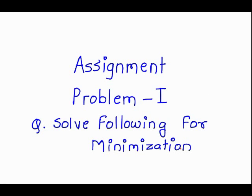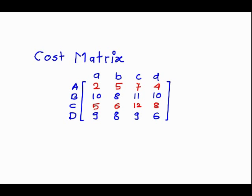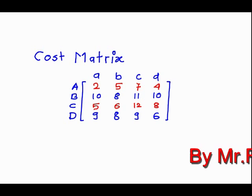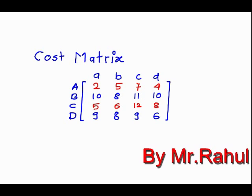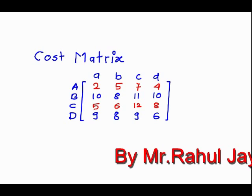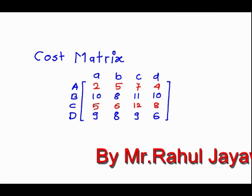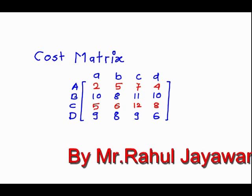In this session, we study the assignment problem. We want to solve the following cost matrix, given workers capital A, B, C, D and machines small a, b, c, d. The entries are the number of minutes required to complete one job. For example, the first entry is 2, meaning 2 minutes are required for worker A on machine a.